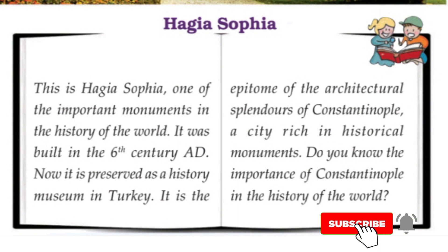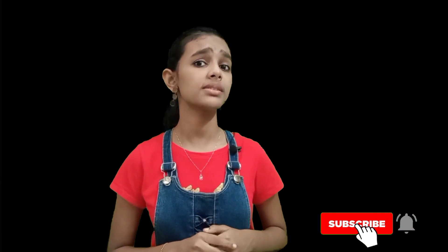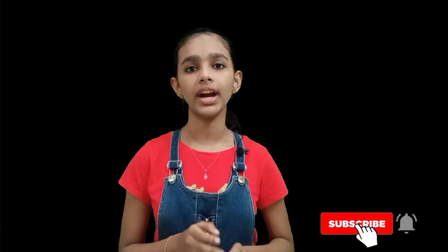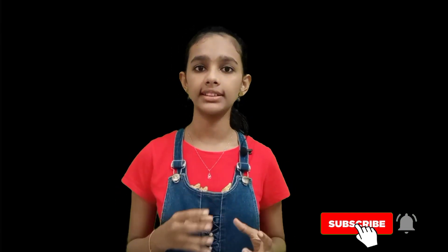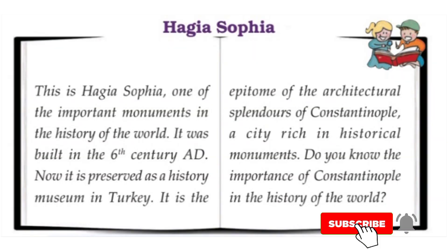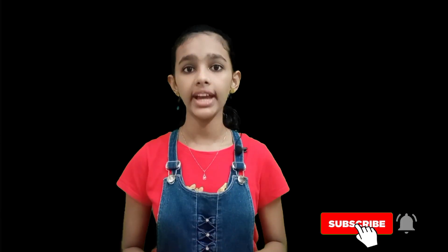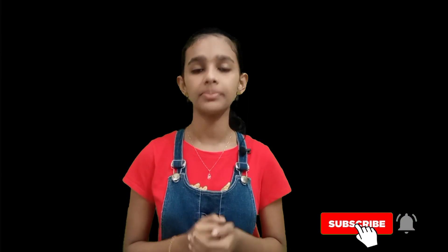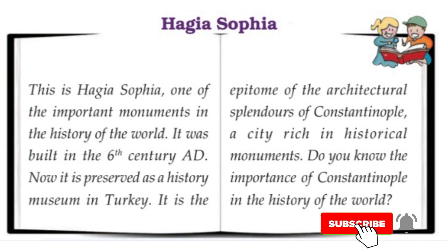Hagia Sophia is one of the most important monuments in the history of the world. It was built in the sixth century AD. Now it is preserved as a history museum in Turkey. It is the epitome of the architectural splendors of Constantinople, a city rich in historical monuments.